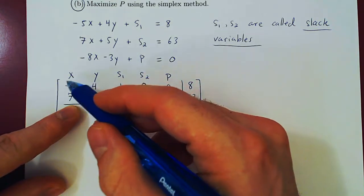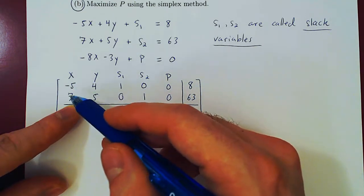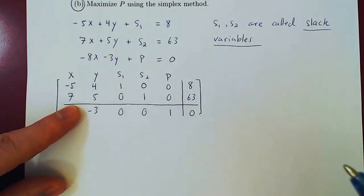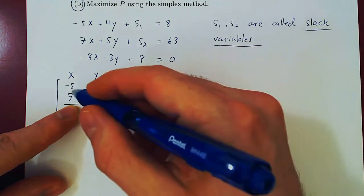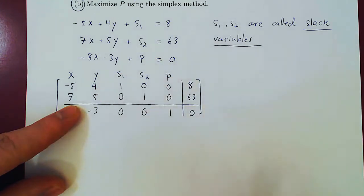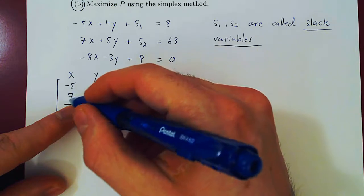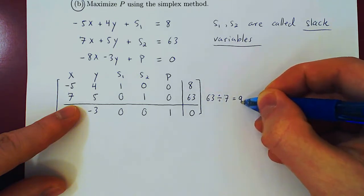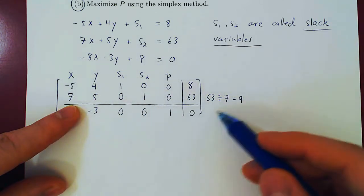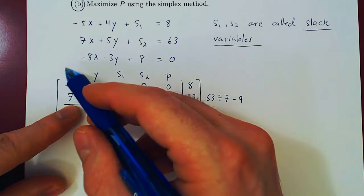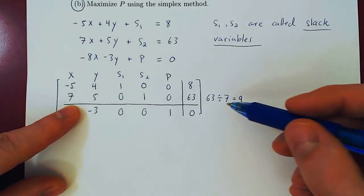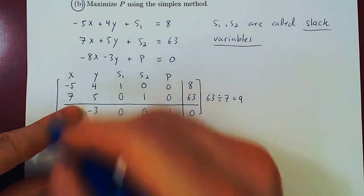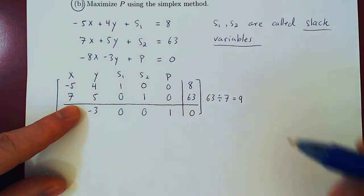Then we only consider the positive entries, so we ignore negative entries. If we had more positive entries, we'd consider them as well. And what we compute for each positive entry in our column, here we only have one, we find the ratio of the constant term over the corresponding entry. So here we'd have 63 divided by 7, which would give us 9. If we had more positive entries in this column, we'd do the same thing. We'd pick the constant term over the entry and have the ratio. The question now is why? Well, the entry giving the smallest ratio will be turned into a pivoting 1, or if you prefer, a leading 1.